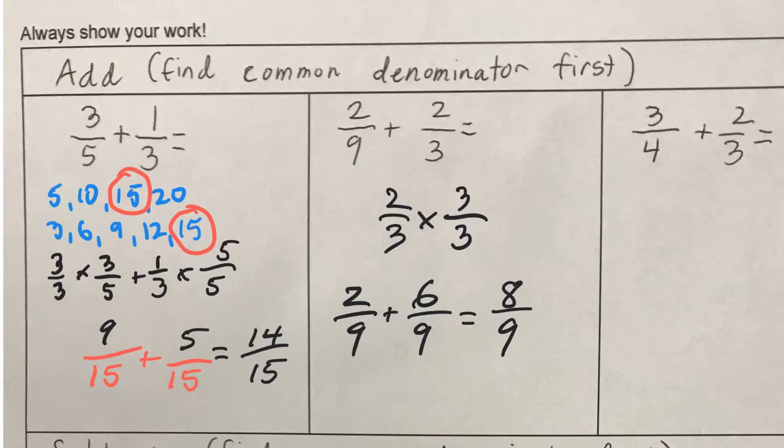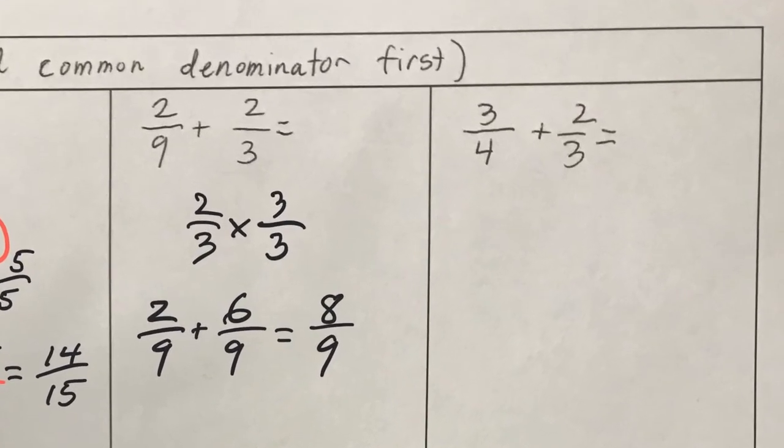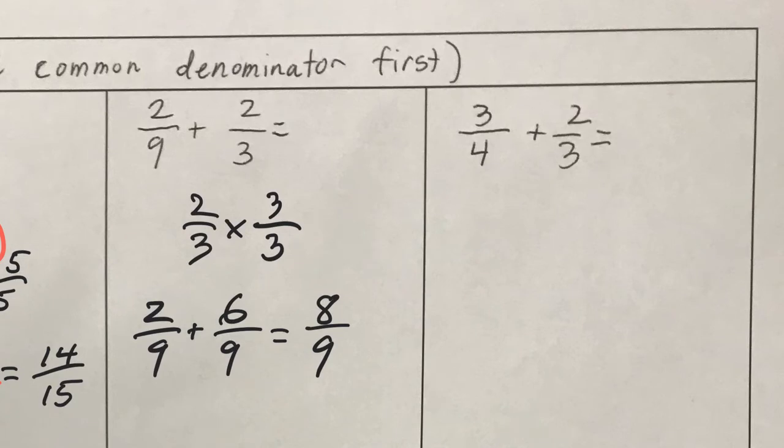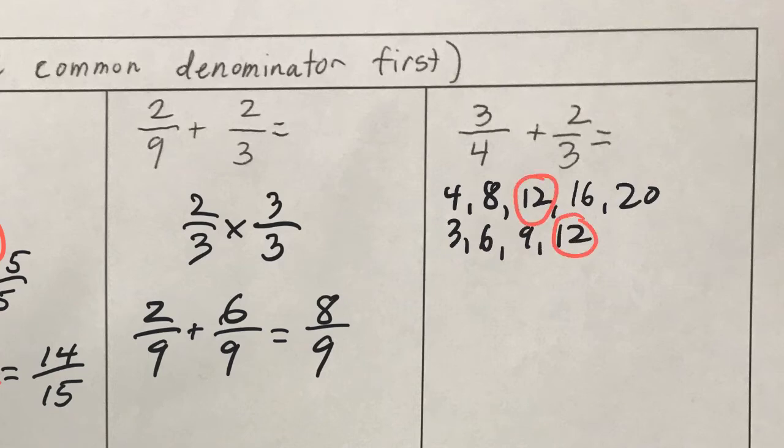For the next one, I'm not going to do this whole thing for you. But let's find the common denominator. 4, 8, 12, 16, 20. That's enough. 3, 6, 9, 12. And look at that. We've got a common denominator. So, you now need to put in twelfths. Can you convert 3 fourths into twelfths? What is 3 fourths into twelfths? What is 2 thirds into twelfths? Think about how we just did it in the other places and figure that out and then add them together.